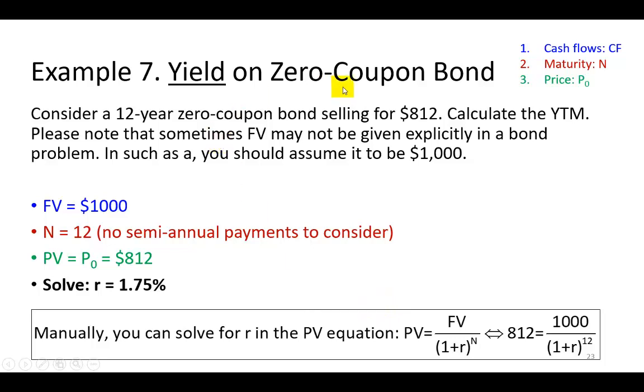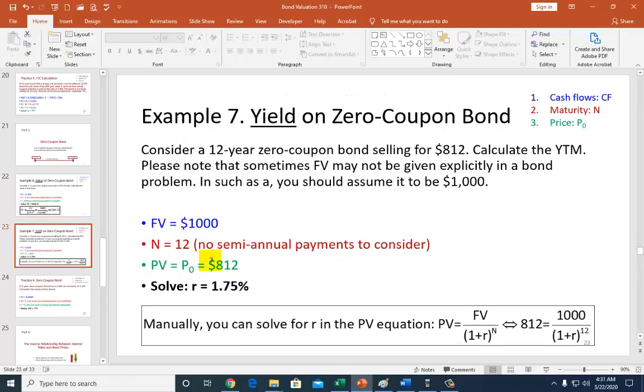Now then, how about the yield on a zero-coupon bond? It says here, consider a 12-year zero-coupon bond selling for $812, so discount. Calculate the yield to maturity. Now, in this problem, I have not given explicitly the face value of $1,000. And that's why I wrote again here that sometimes the face value of a bond may not be given explicitly in a bond problem. In such a situation, you should assume it to be $1,000.